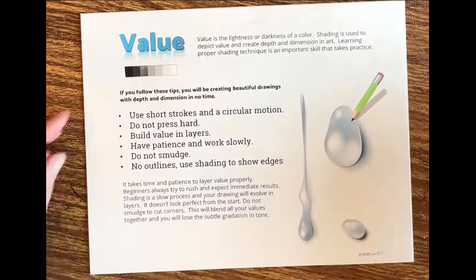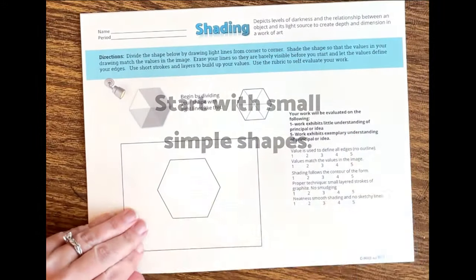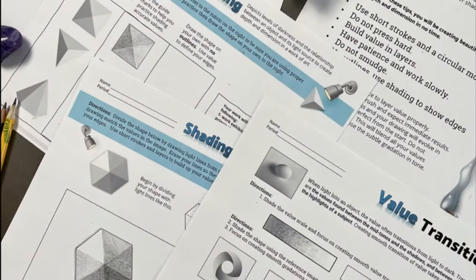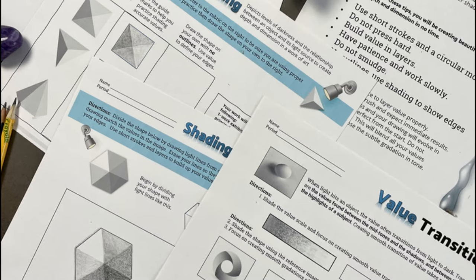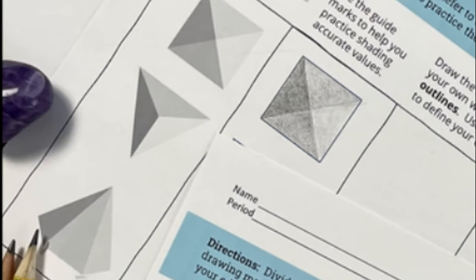Learning to shade takes practice and just like learning anything new we want to break it down and start with very simple shapes. We're going to isolate the aspects of shading and get really good at each thing first. We're beginning with shapes that have flat planes of value. Notice these shapes do not transition from dark to light.